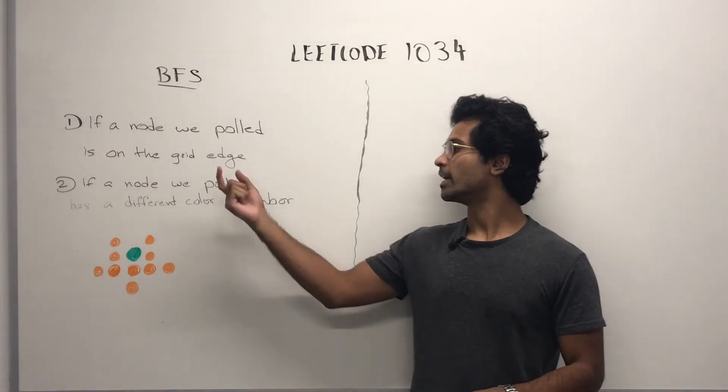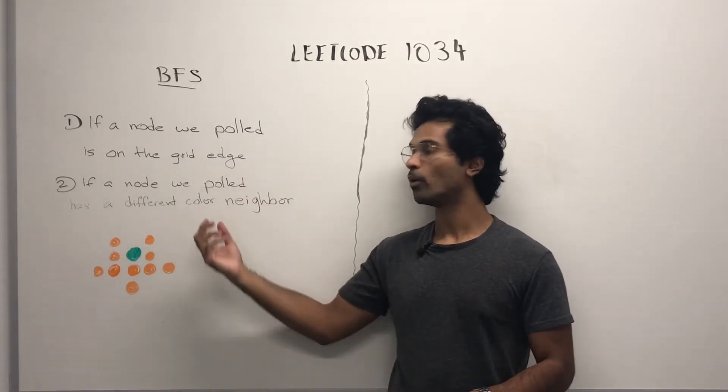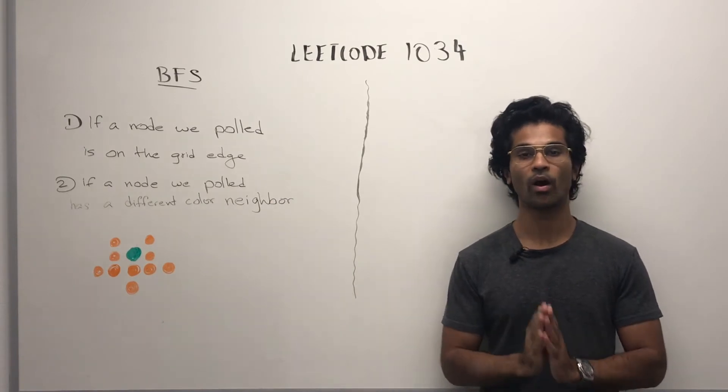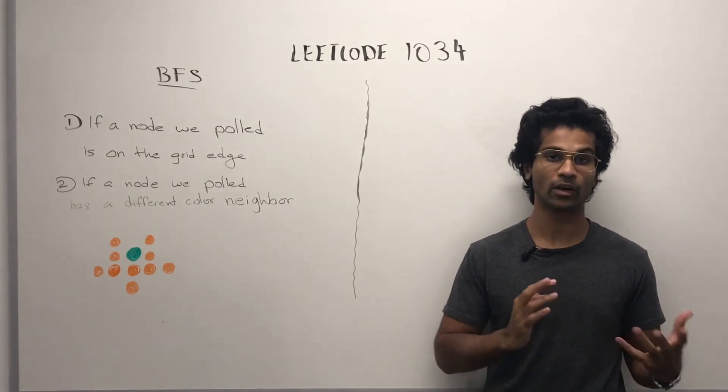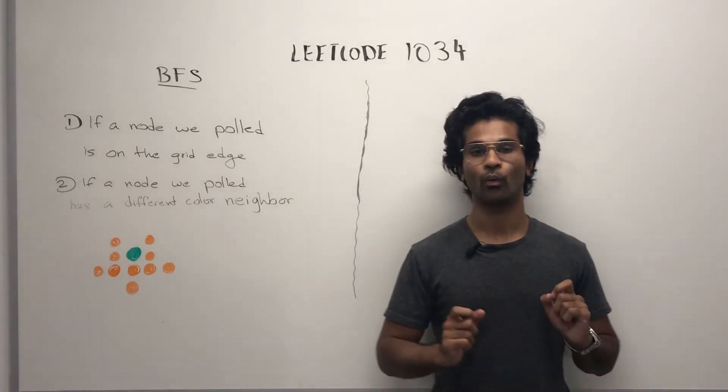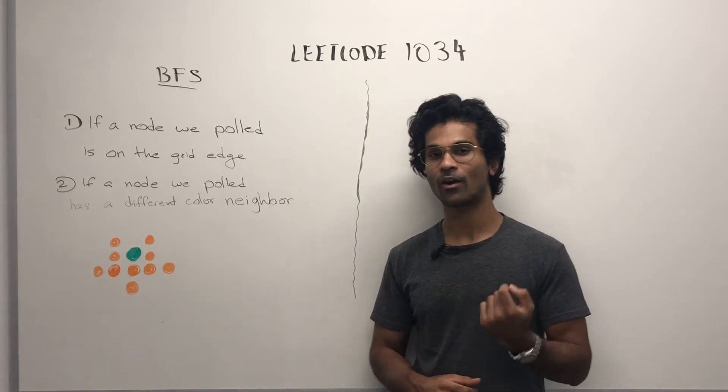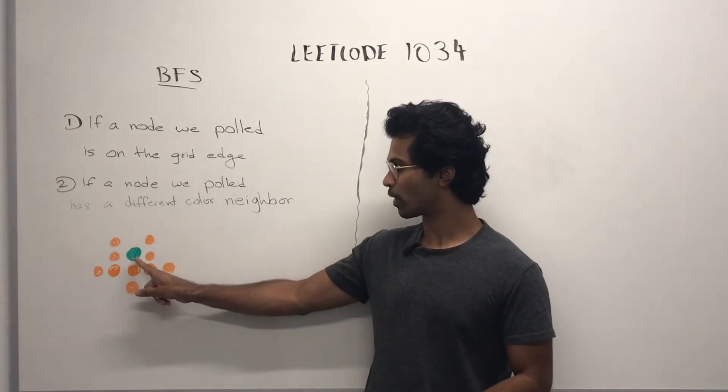One, if it's on the grid edge, and two, if a node we pull has at least one neighbor which is a different color. So, this node would be colored because we have a different color, a green node, which is right next to it.